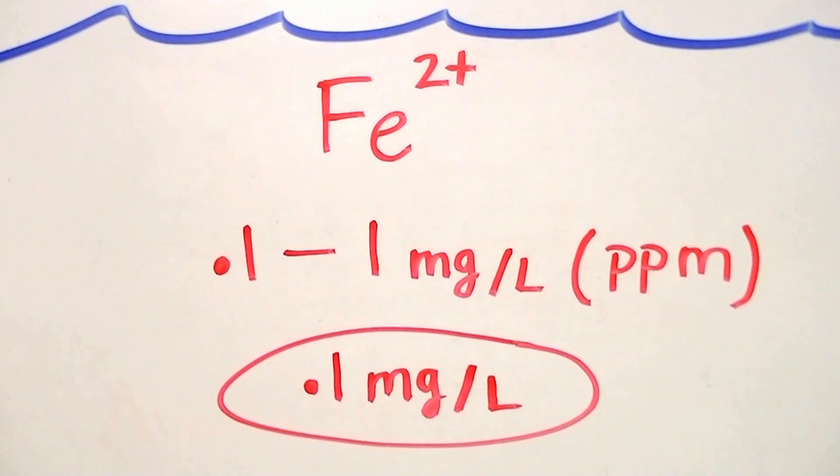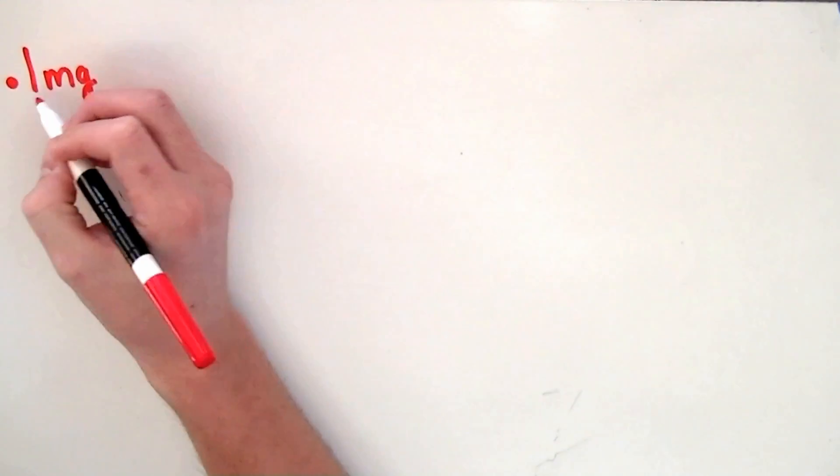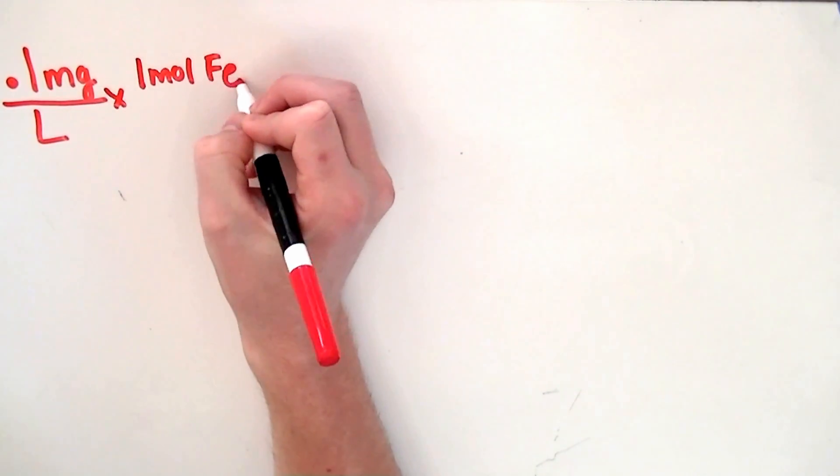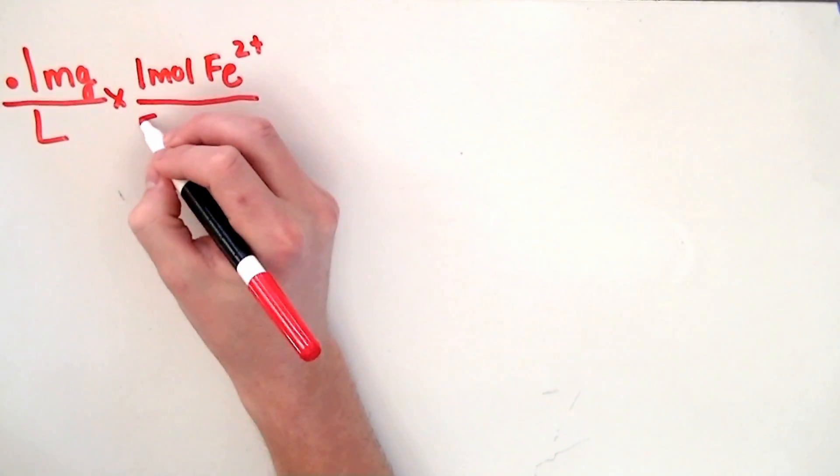Now let's go over some basic stoichiometry, which will enable us to make our solution. There are a few numbers in the following calculation which are subject to change, and we'll go over them at the end. We start with our desired concentration, 0.1 mg per liter. We then divide by 55.84 grams, which is the molecular weight of iron 2.